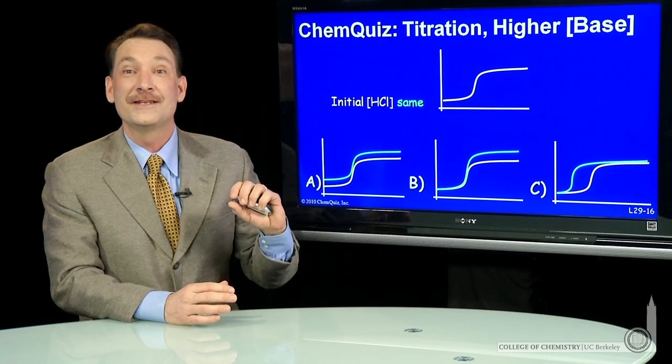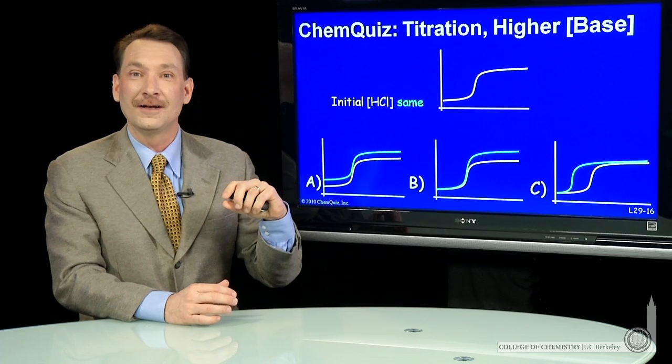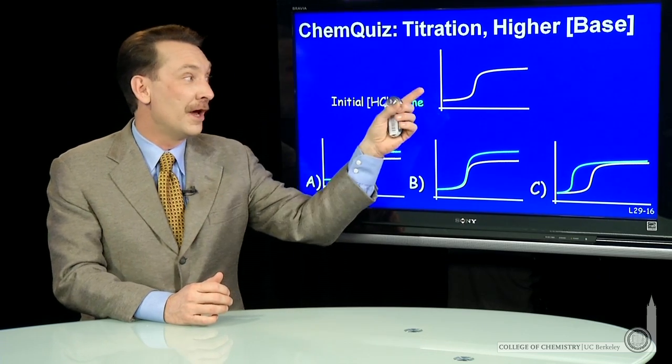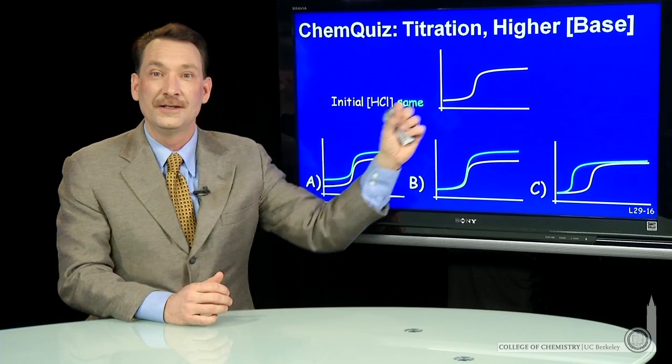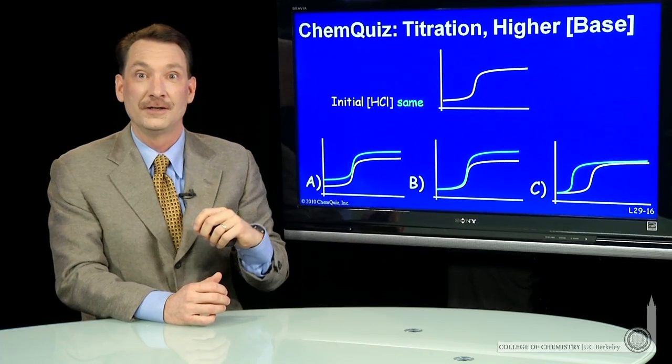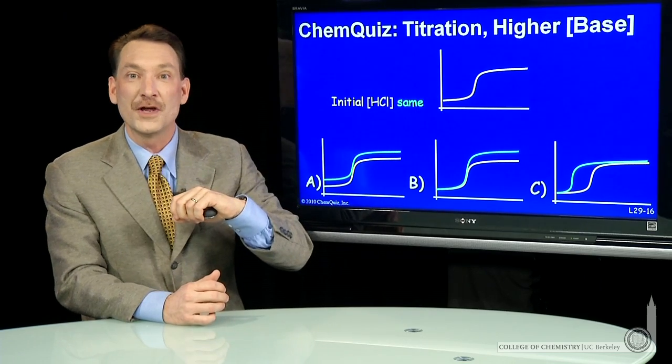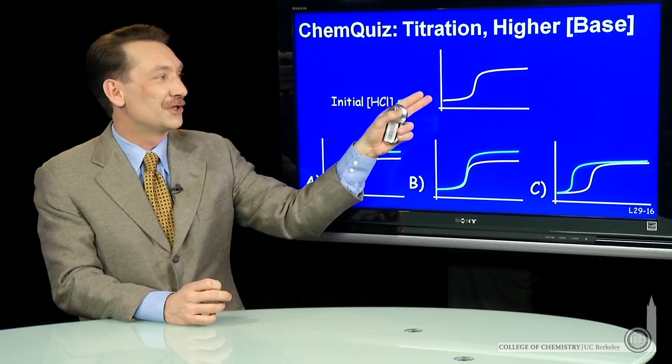We're talking about titrating HCl, a strong acid, with two different strong base solutions - one 0.1 molar, and then doing it again with 0.2 molar strong base. The question is, how does that second 0.2 molar pH curve look?